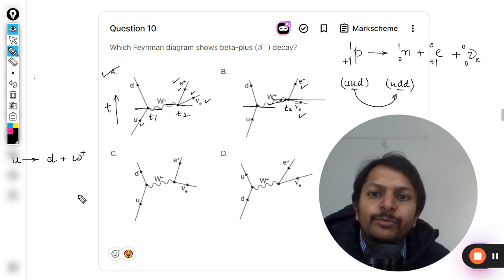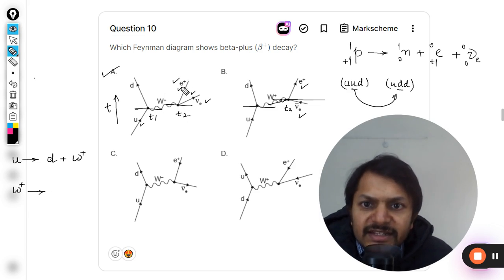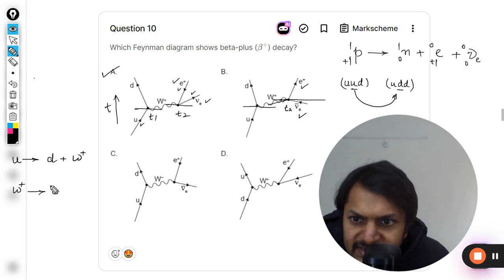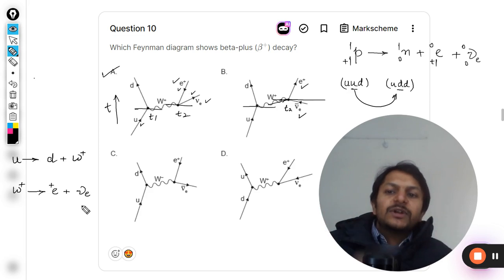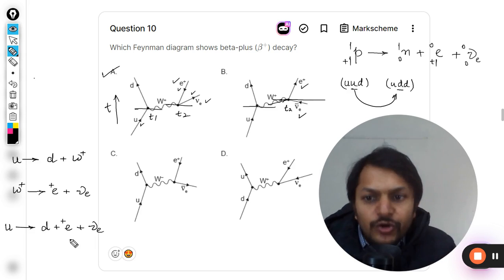One is positron and another is neutrino. When you add these two reactions, the W plus gets cancelled out. Clearly u is converted into d, positron is created, neutrino is created. So this reaction seems to be absolutely correct.